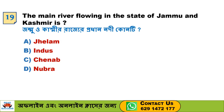Next question: The main river flowing in the state of Jammu and Kashmir is — Option A. Jhelum, Option B. Indus, Option C. Chenab, Option D. Nubra. Option A, Jhelum, is the correct answer.